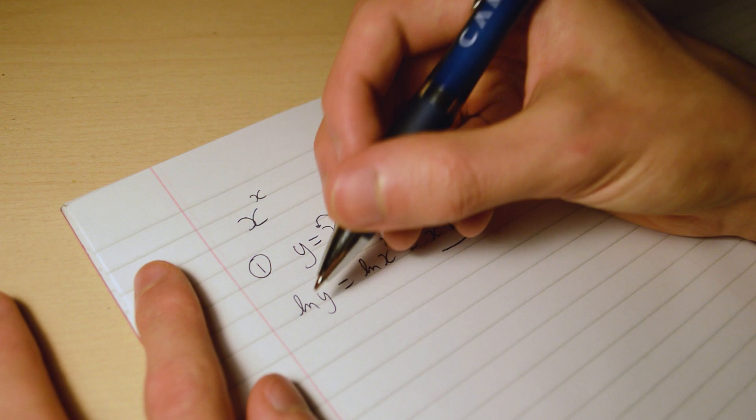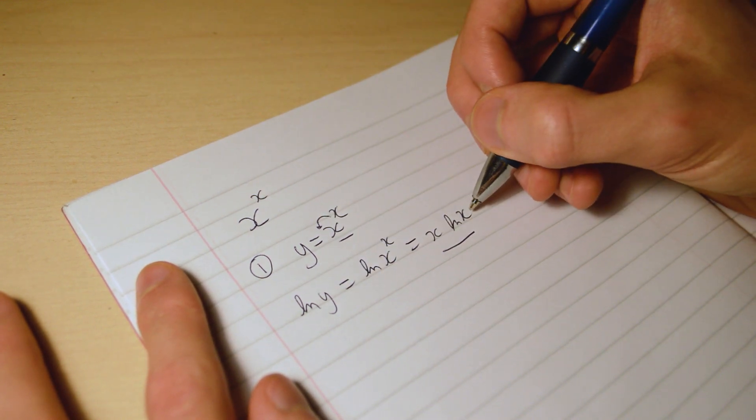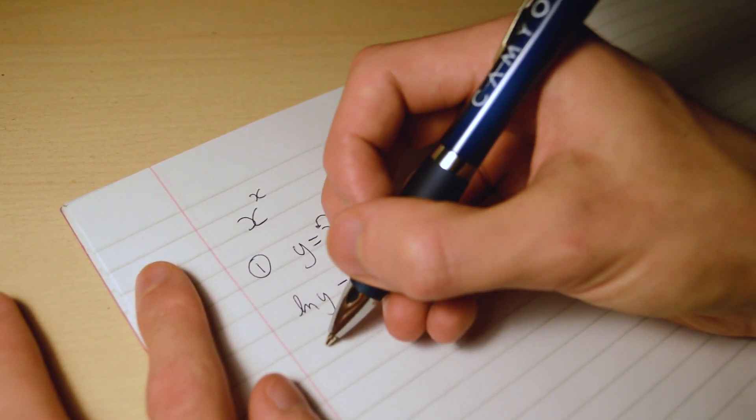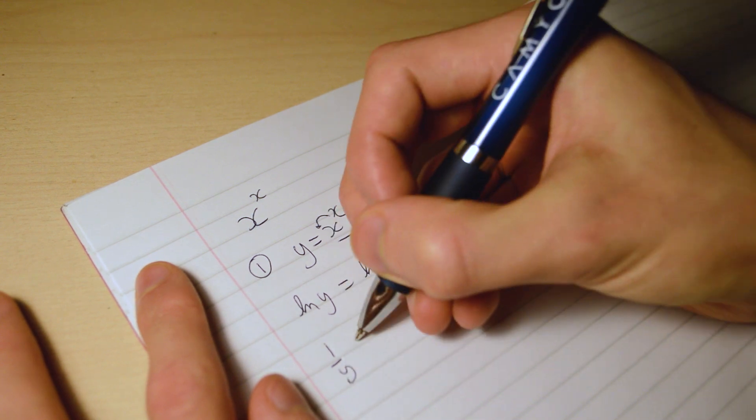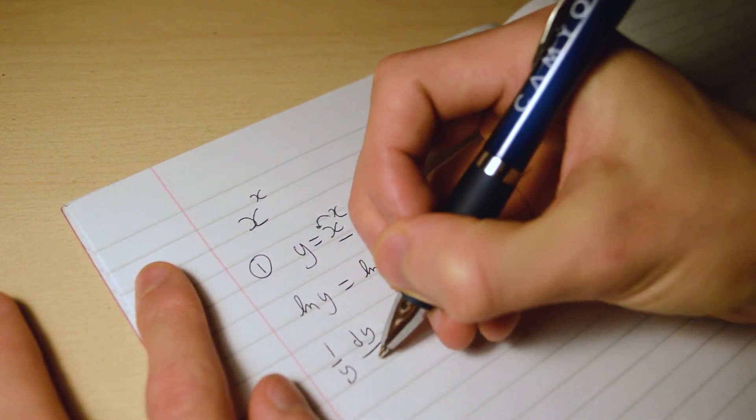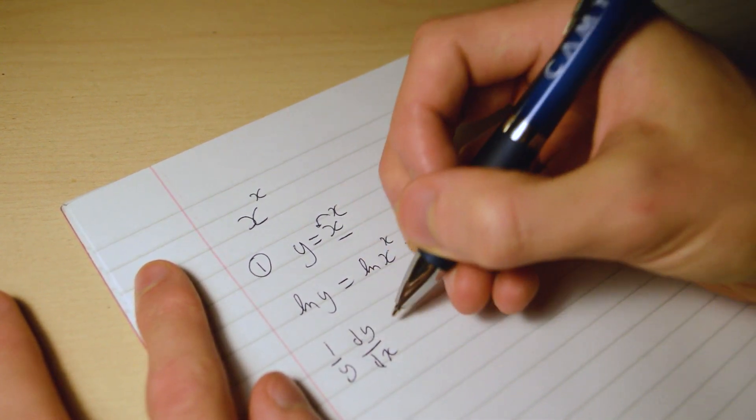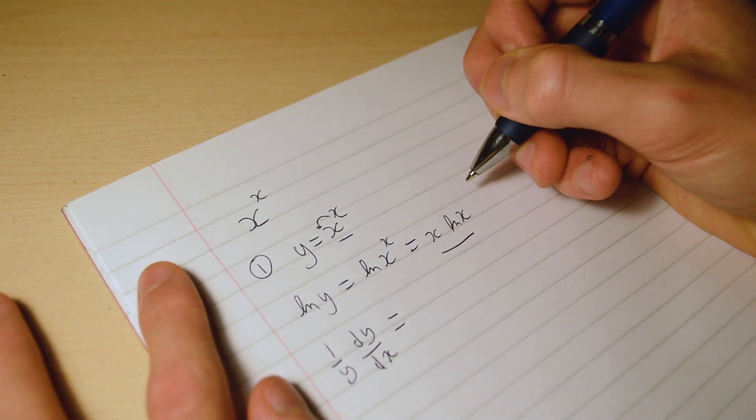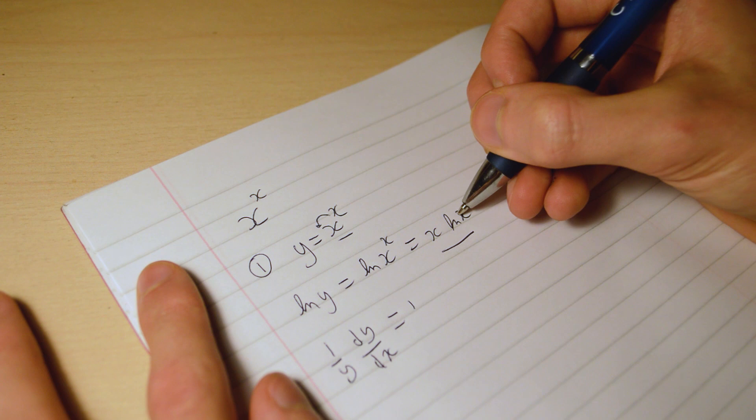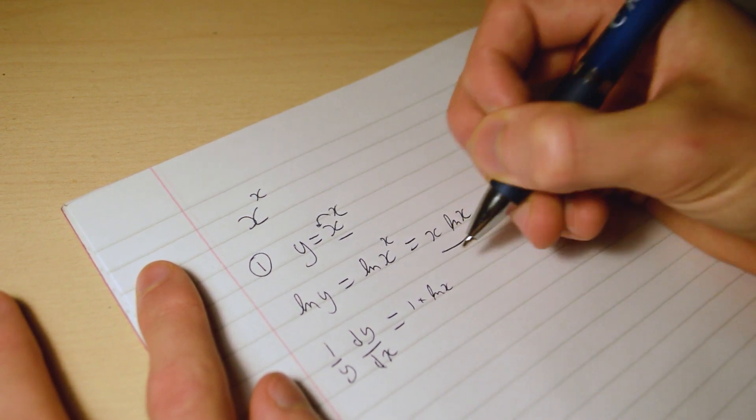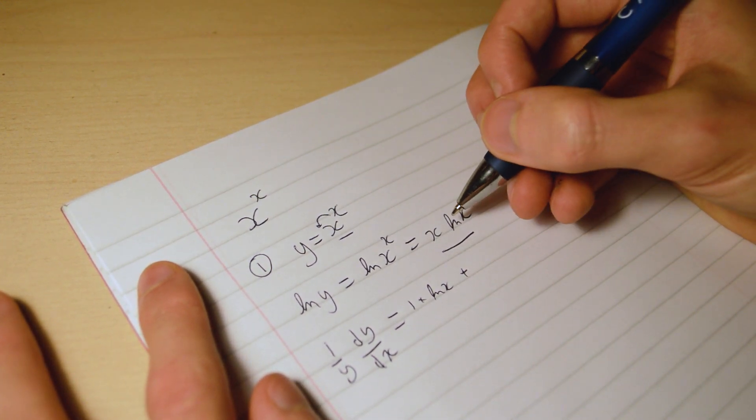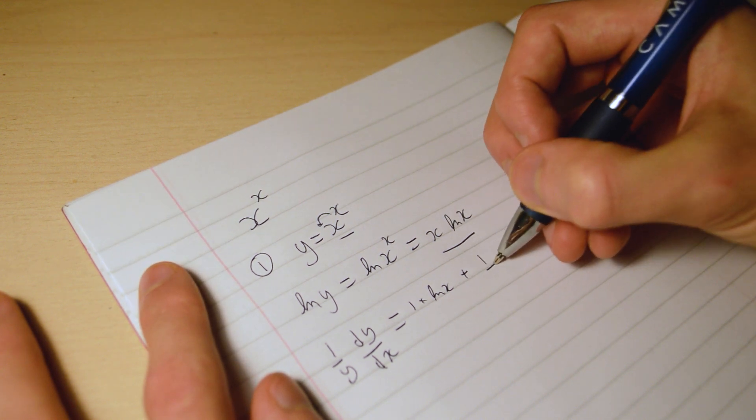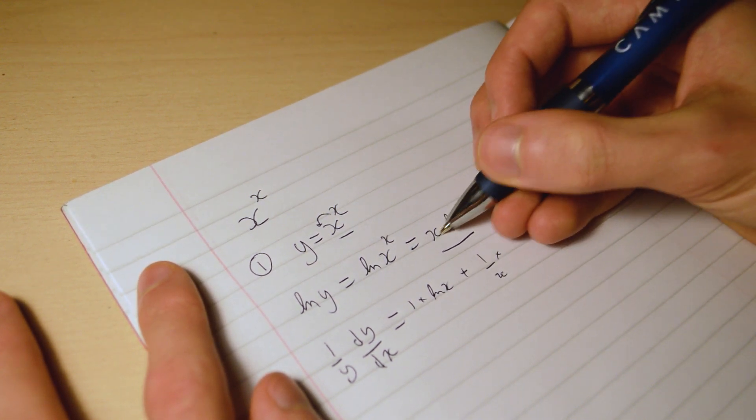So what we're going to do is differentiate both log y and x log x. Differentiate log y, you get 1 over y dy/dx because of the chain rule. And now differentiating this, we're going to use the product rule. We're going to differentiate x, leave the other, plus differentiate the other, leave x.